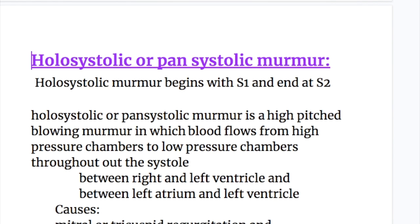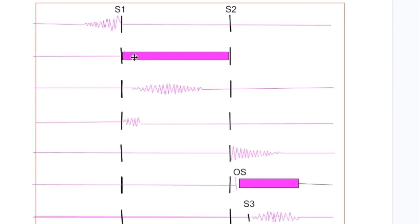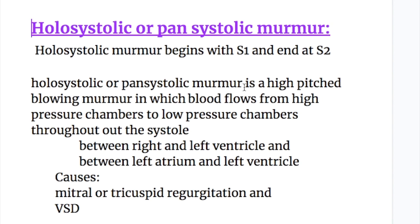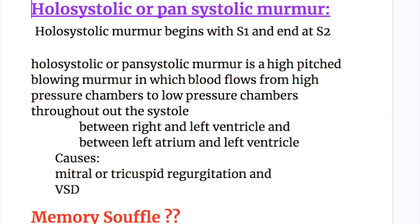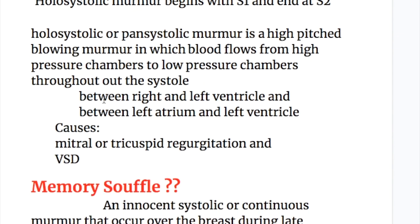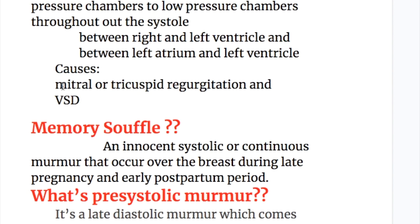Holosystolic or pansystolic murmur maintains the same intensity throughout systole, starting from the first heart sound and ending at the second heart sound. It is a high pitch blowing murmur in which blood flows from high pressure chambers to low pressure chambers throughout systole — for example, between right and left ventricle in VSD, between right atrium and right ventricle in tricuspid regurgitation, and between left atrium and left ventricle in mitral regurgitation.